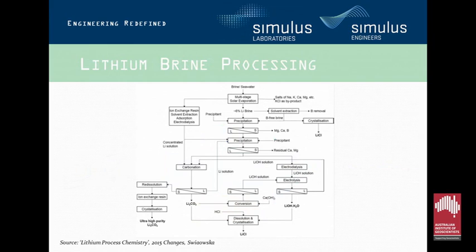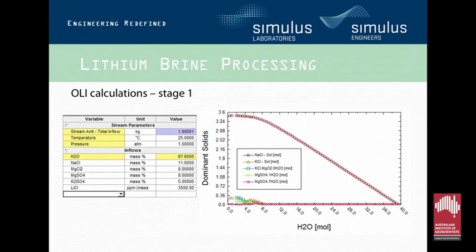Here we have a brine processing flow sheet lifted from a lithium process chemistry example. It shows brine processing with multi-stage solar evaporation producing a 6% lithium brine. Running this through OLI, I looked at what we'd expect to see. Here are the outputs from a stage one calculation — a first stage evaporation from a typical brine from the South American Salars. As expected, as moles of water are removed, sodium chloride crystallizes out up to a point where other species begin crystallizing as well.